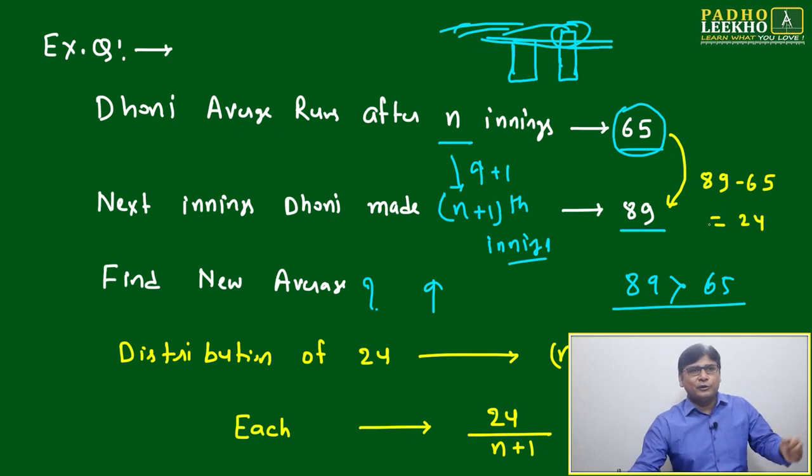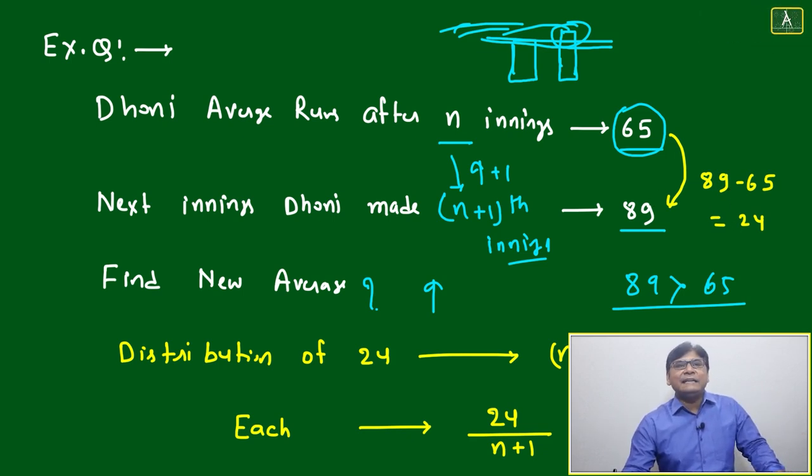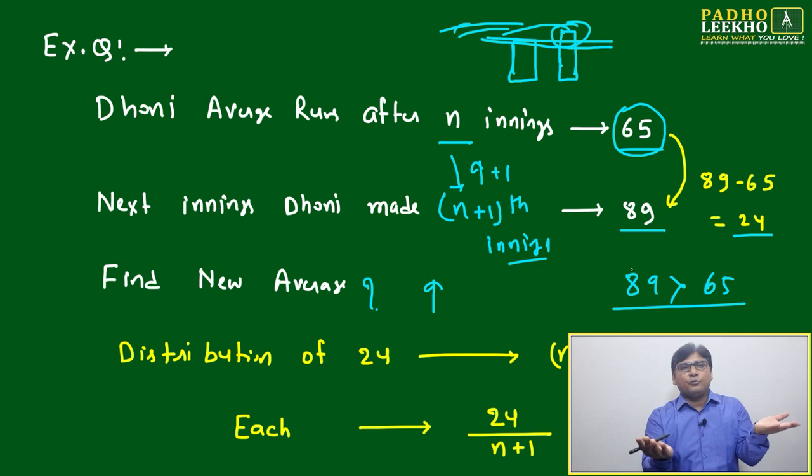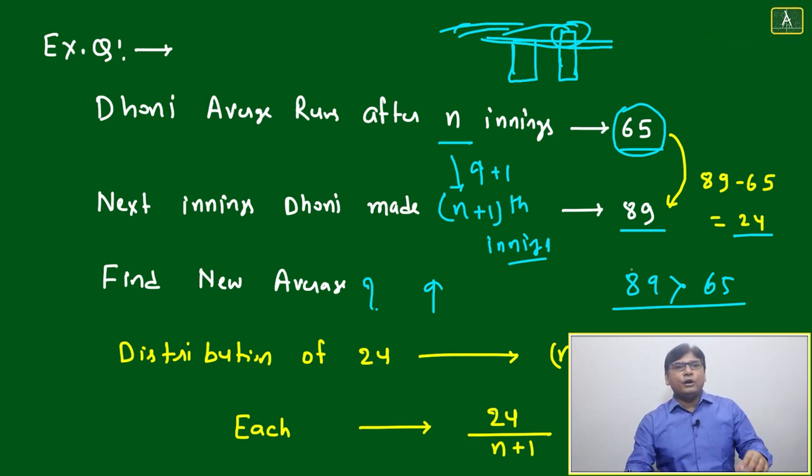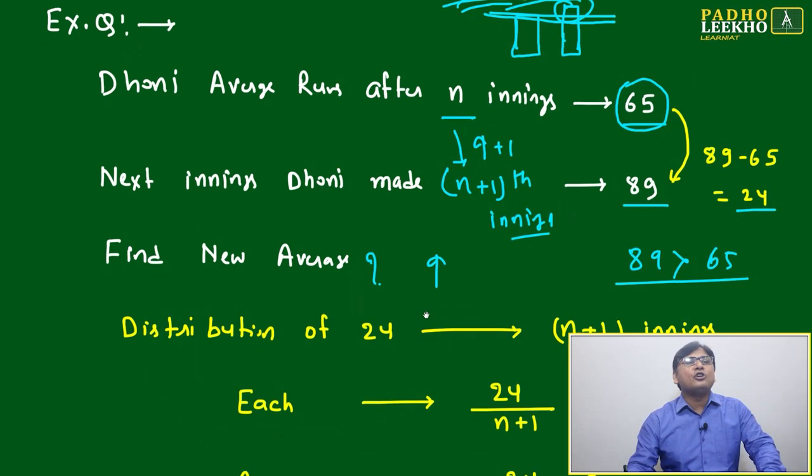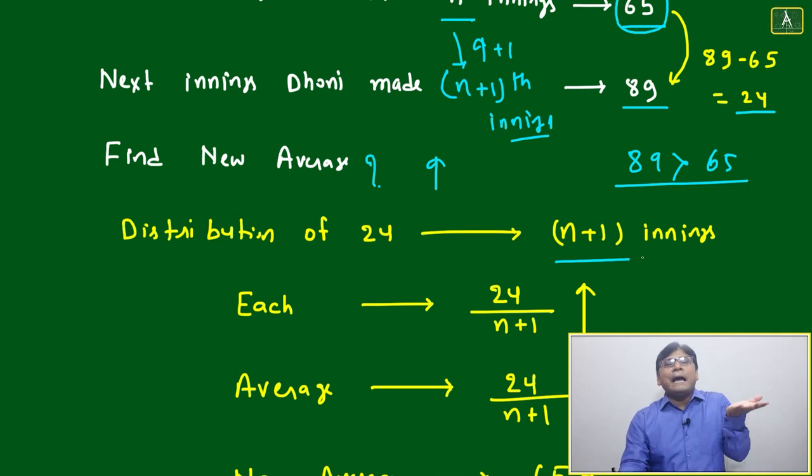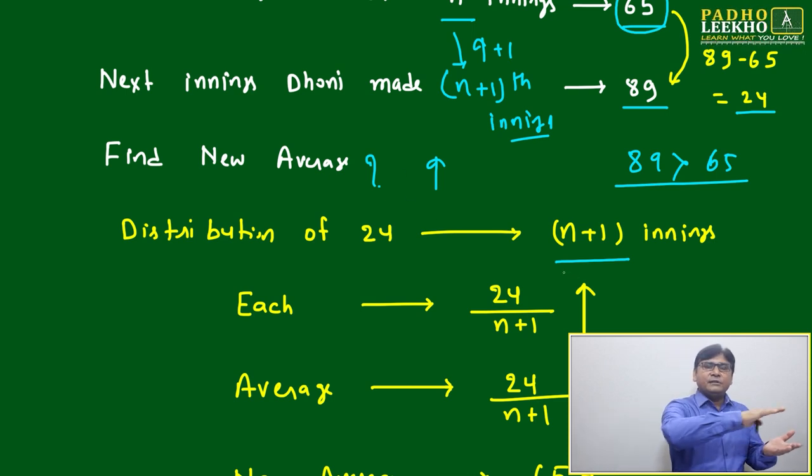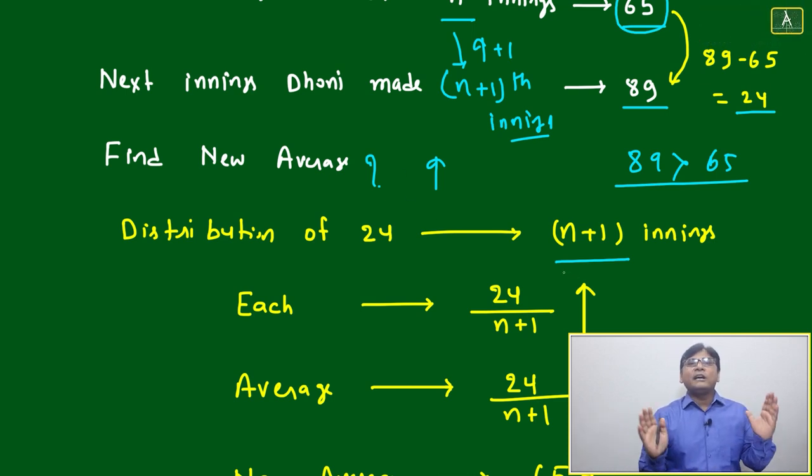How much it will shoot up, that only we have to analyze very carefully. 89 minus 65 is 24, meaning 24 is extra. 65 will go to that box, whatever average is there will settle down. What is extra? 24. This 24 we have to distribute over n+1 innings. How much distribution happens, that much average will shoot up. That is very simple logic. n+1 innings happen, average we have taken everywhere is 65. Now total n+1 boxes you have, you have extra number 24.